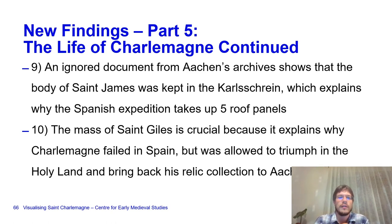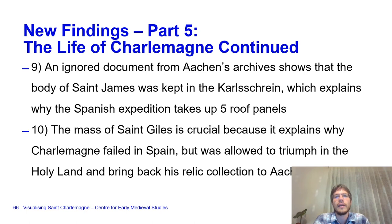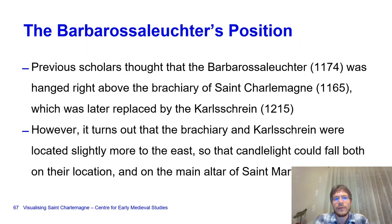The Mass of Saint Giles is crucial because it explains why Charlemagne failed in Spain but was allowed to triumph in the Holy Land and bring back his relic collection to Aachen. This explains why Charlemagne did not found Aachen earlier but needed to wait—and this more or less covers the shrine.